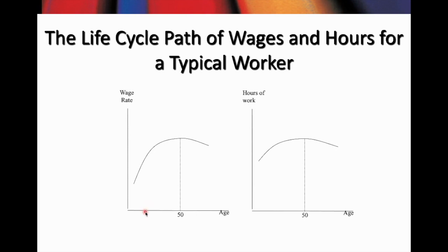Let's focus on the left diagram first. Notice that when this worker is young, maybe from the age of 20 to 30 years old, the wage rate is low. So what we can say here is the wage rate for a young worker is usually low compared to a much more senior worker, and what this means is leisure for young workers is cheap. As the worker gets older, the level of wage rate starts to increase, and therefore leisure now starts to get more and more expensive. As indicated in this diagram, when this worker reaches the age of 50 years old, his wage reaches the highest level, peaking at age 50. So at this age, leisure is the most expensive for this worker.